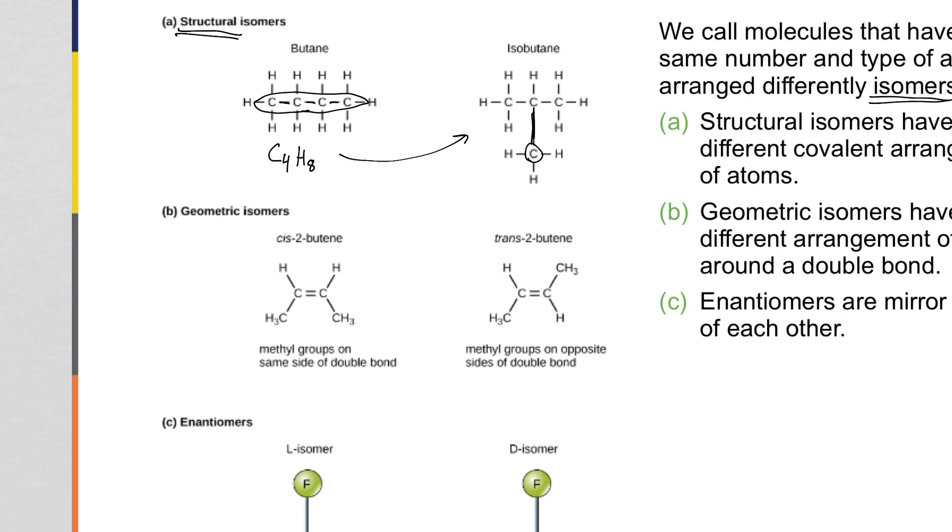The second way this can happen is geometric isomers. When this happens, the arrangement of the bonds doesn't really change. We still have carbon, carbon, carbon, carbon, single bonds here, double bond here. That doesn't really change on the other side in the second version of the molecule. What does change is the arrangement of those atoms around the double bond.